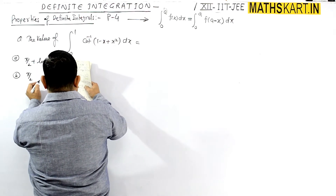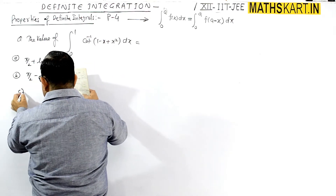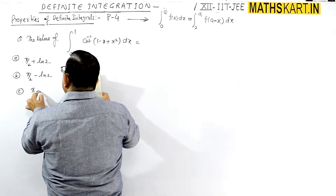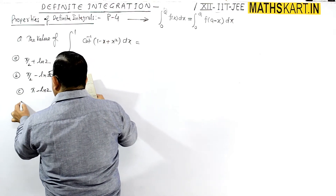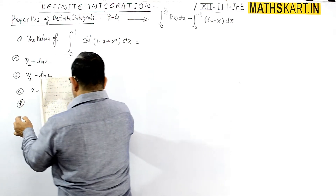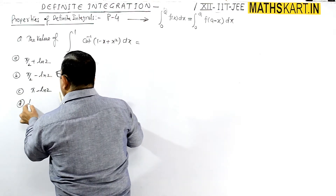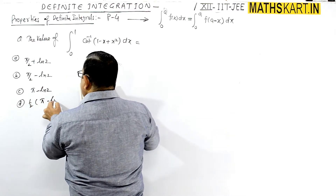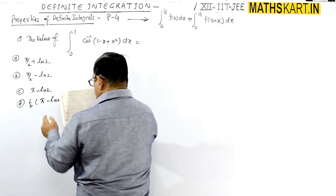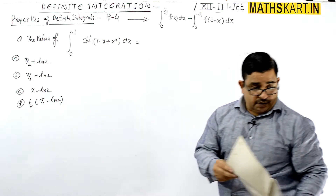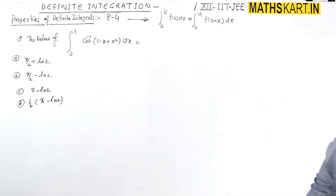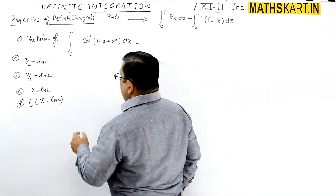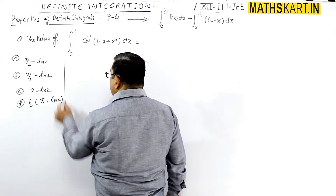C option is pi minus ln 2 and D option is 1 by 2 times pi minus ln 2. These are the given options. Now what we have to do is express it in the form of cot inverse.